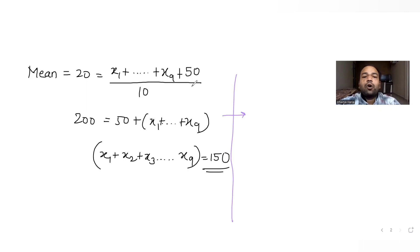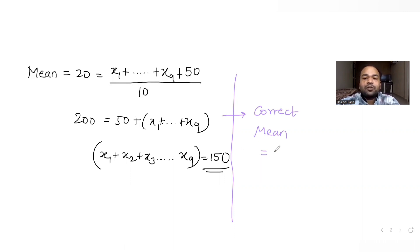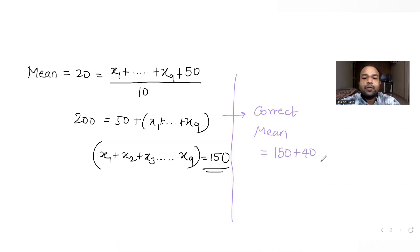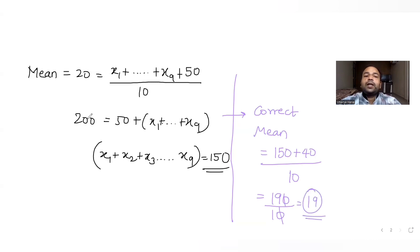Now the correct observation was 40 instead of 50. Once we have the sum of the first nine observations as 150, we can find the correct mean. The sum of all correct observations is 150 plus 40, which gives 190. Dividing by 10, the correct mean is 19 instead of 20.